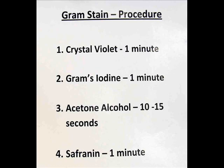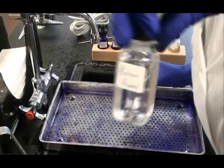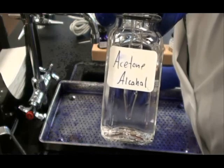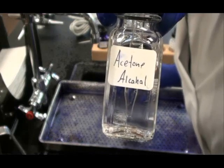My next step is to apply the decolorizer acetone alcohol. What this step will do is remove the purple stain from my gram negative cells. Here is the decolorizer.